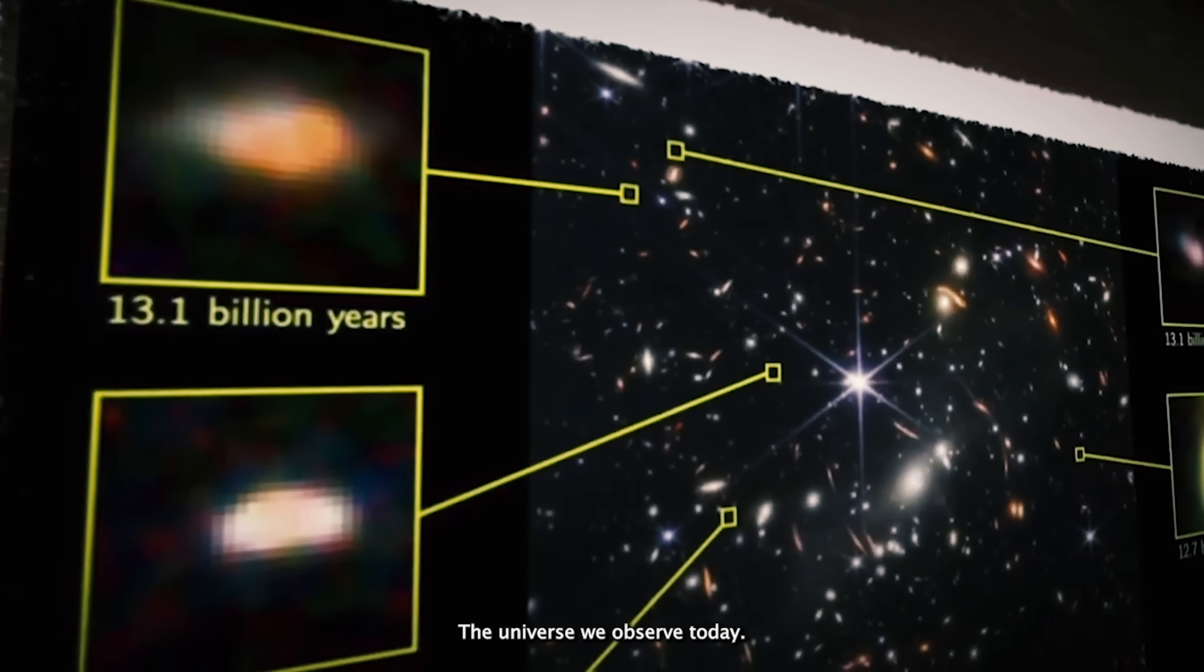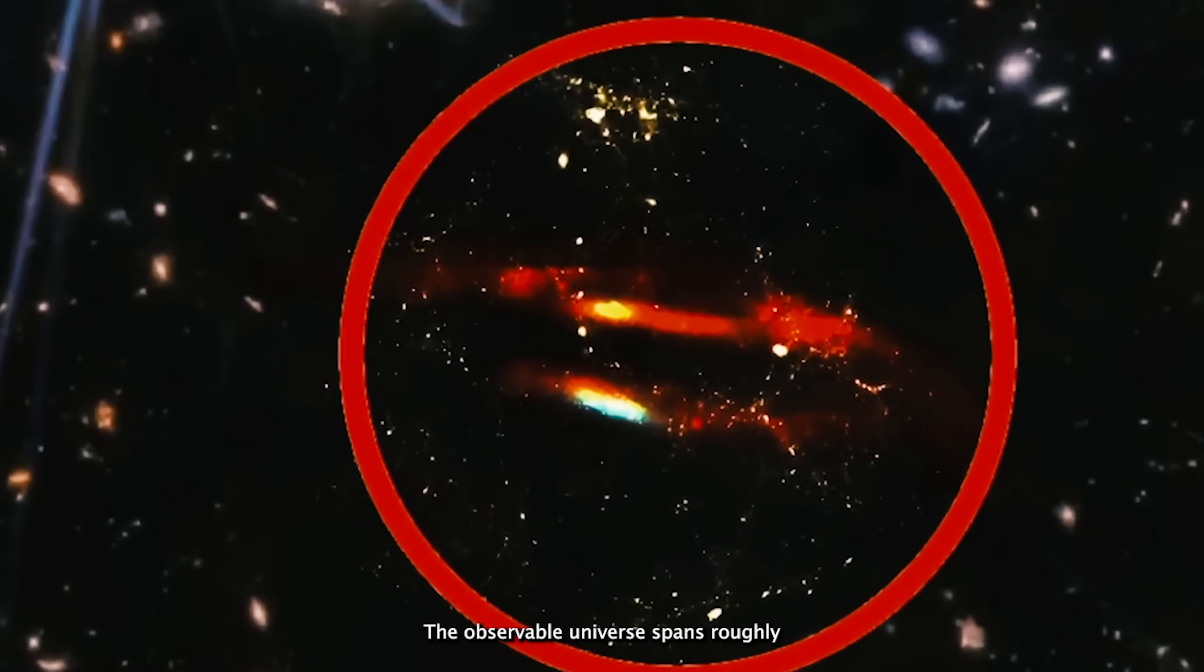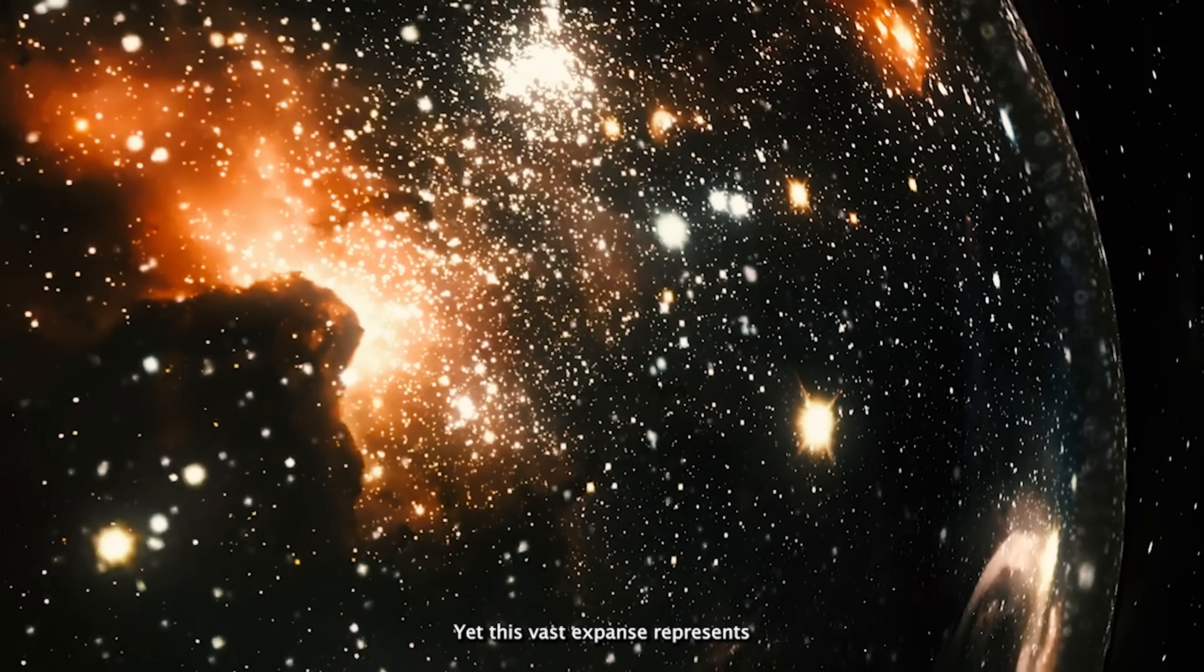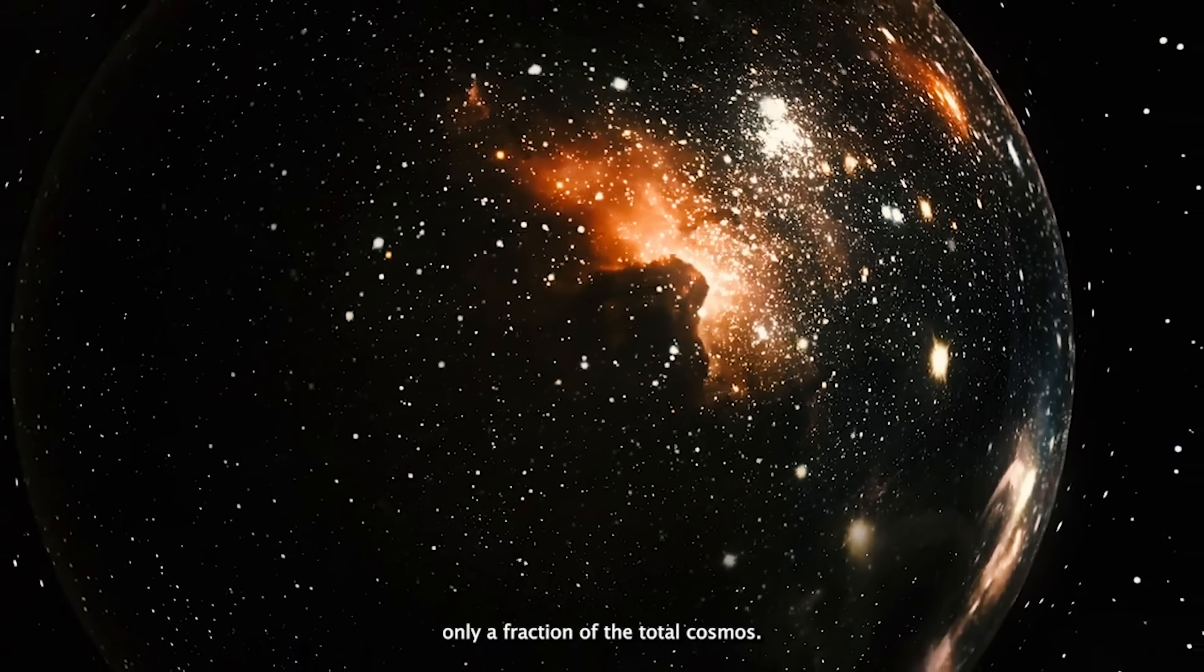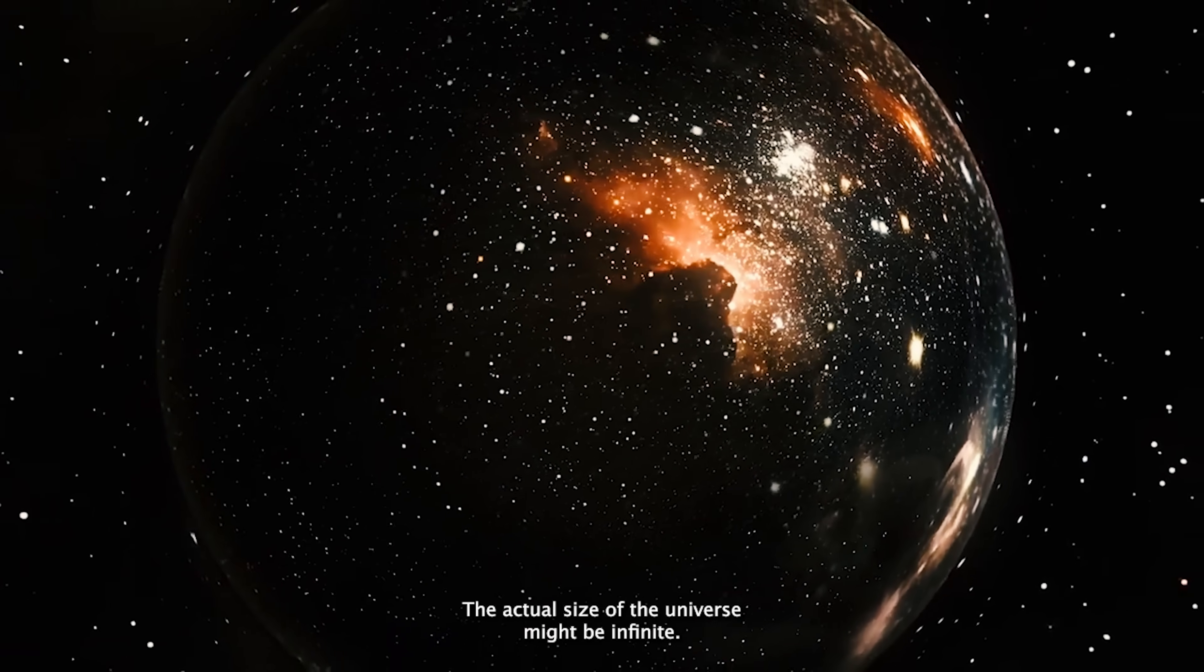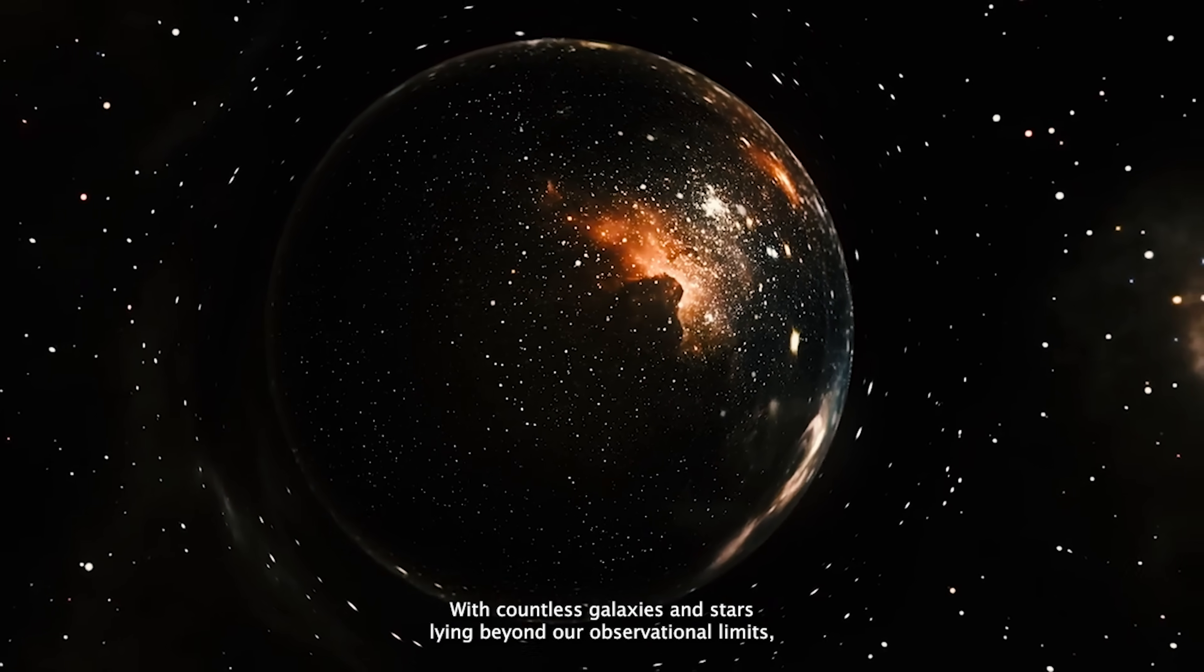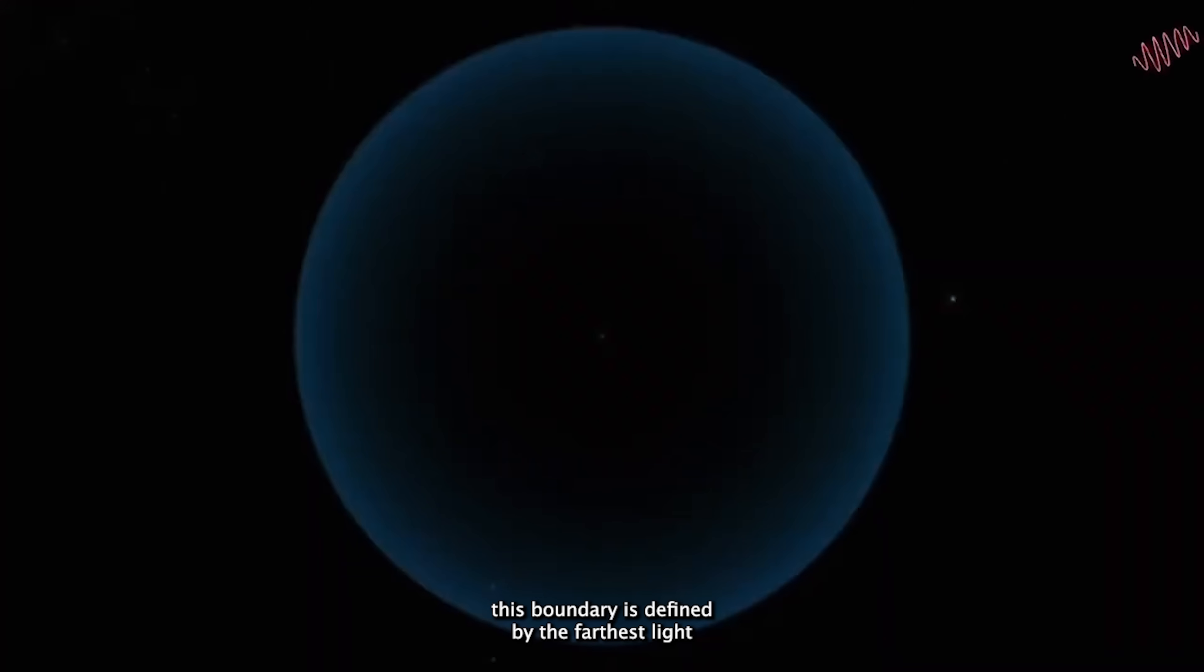The universe we observe today, the observable universe, spans roughly 93 billion light-years across. Yet, this vast expanse represents only a fraction of the total cosmos. The actual size of the universe might be infinite, with countless galaxies and stars lying beyond our observational limits. This boundary is defined by the farthest light that has had enough time to reach us since the Big Bang.